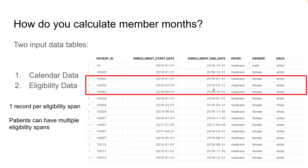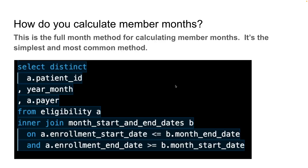So now let's see how we can convert this eligibility data into member months. One of the methods that's most commonly used is what we refer to at Tuva Health as the full month method for calculating member months. What you're doing is a pretty simple join from your eligibility table to your calendar table — in this case, we call the calendar table month start and end dates.